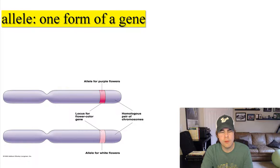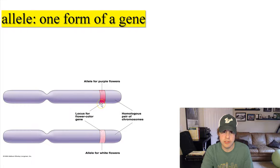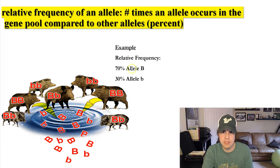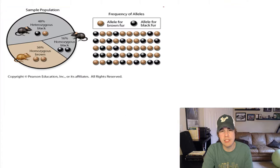One form of a gene is an allele — this is review from Mendelian genetics, like purple and white flowers. That's the locus for the gene — the location — and at that location you have two alleles. The relative frequency of an allele is the number of times an allele occurs in the gene pool, expressed as a percentage. In this example, 70% would be the capital B allele and 30% would be the recessive little b allele.